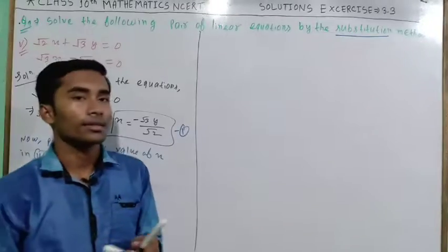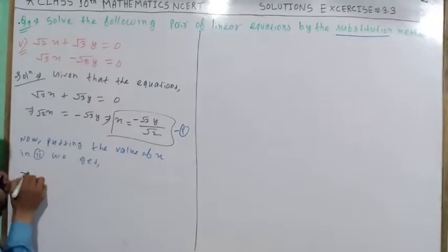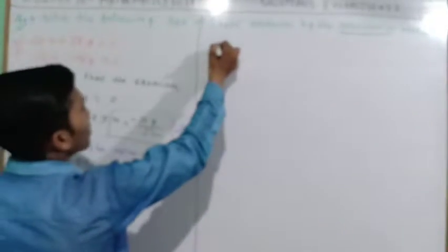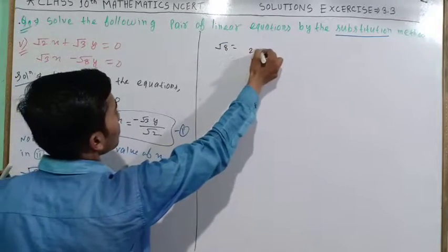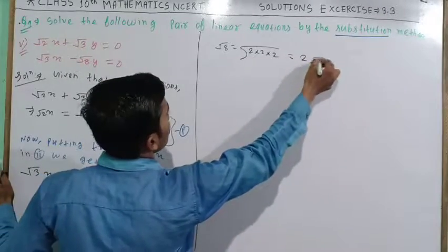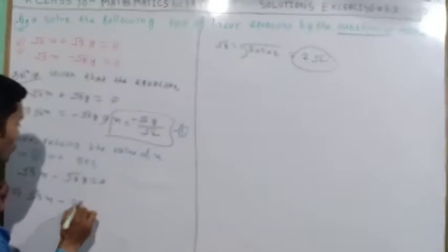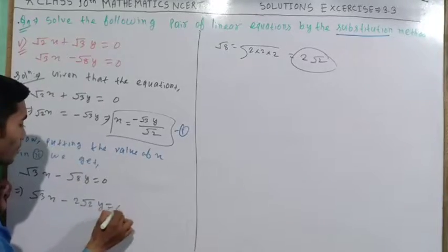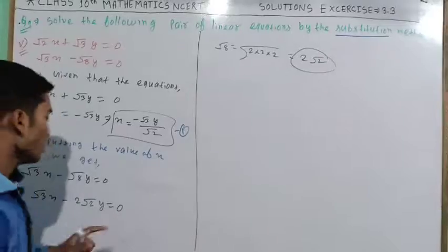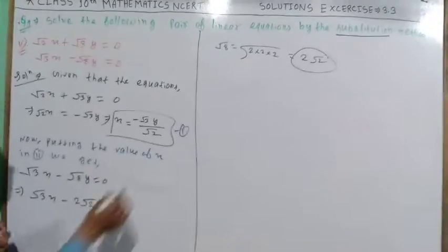I have the second equation: √3x - √8y = 0. √8 can be written as 2√2, so we have √3x - 2√2y = 0.